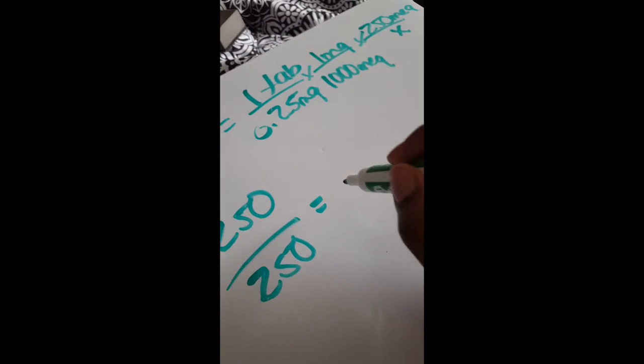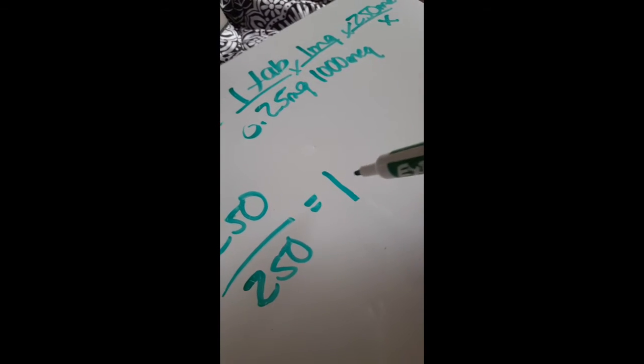So 250 divided by 250 — whatever divided by itself is one — so they take one tab per dose. And what you can also do, which I always do and forgot to tell you guys: after you have your problem set up, go ahead and cross everything out. This X signifies dose. So once you get to the end of your problem, start crossing out because it has to cross out diagonally, and then you're left with tabs per dose, which is what you're looking for. So you already know: one tab per dose.